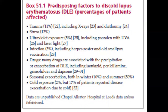Predisposing factors of DLE include trauma (including x-rays or diathermy), stress, and ultraviolet exposure — including PUVA therapy and laser light, so caution is advised when treating DLE patients with lasers. Infections including herpes zoster and smallpox may trigger DLE. Drugs may precipitate DLE, although less commonly than SLE; these include isoniazid, penicillamine, griseofulvin, and dapsone. There are seasonal exacerbations in both winter and summer — more in summer, with a 50% chance of exacerbation, while cold exposure causes exacerbation in 17% of patients.